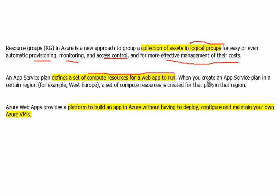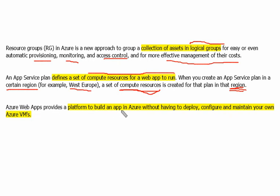When you create an app service plan in a certain region — for example, West Europe — a set of physical compute resources is created for that plan in that region. Azure web apps provide a platform to build apps in Azure without having to deploy, configure, and maintain your own virtual machine. You can run code directly on the web app.